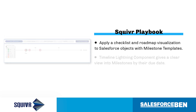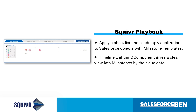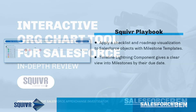The timeline component can be added to Lightning record pages to give a clear view into milestones by their due date. Users can interact with the milestone by clicking to either complete it or edit it.